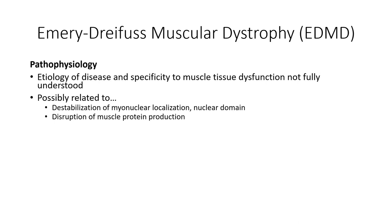One possibility is that loss of these protein components results in destabilization of the nucleoskeleton, which affects gene expression, and that muscle is more dramatically affected due to the mechanical stresses that exist across the membrane. It's also possible that these defects compromise myonuclear localization and disrupt the myonuclear domain, leading to excessive muscle damage.